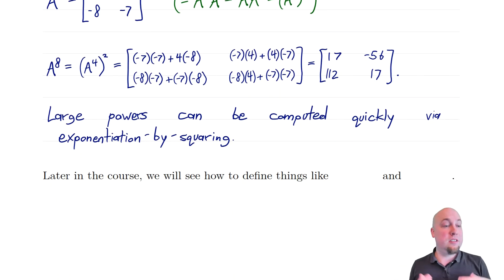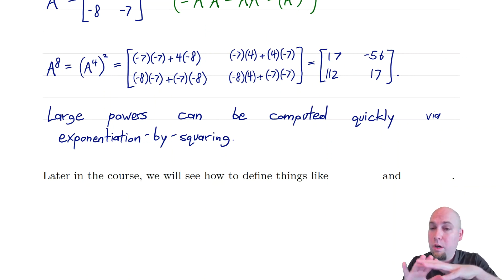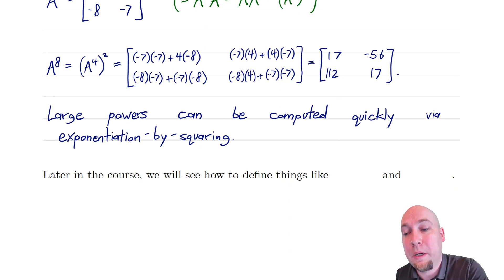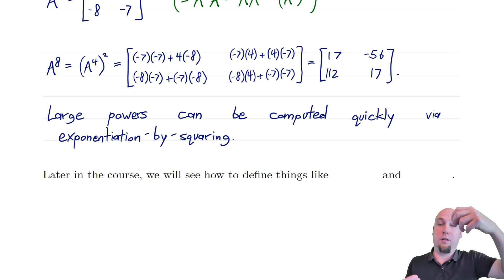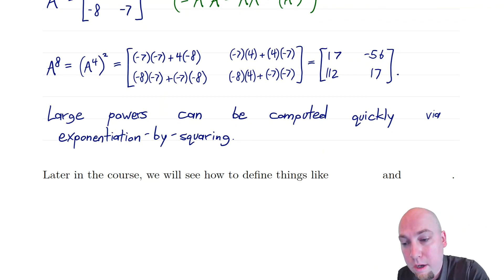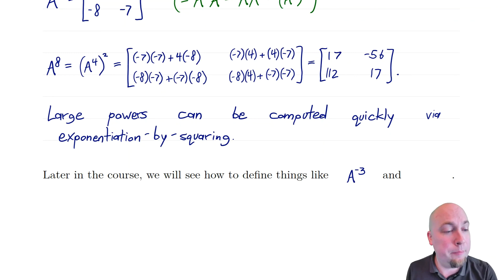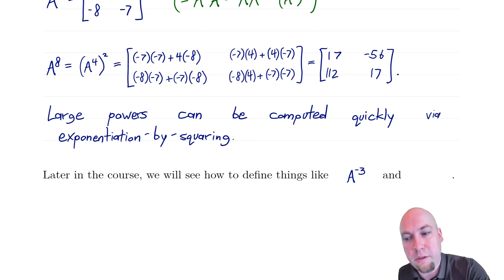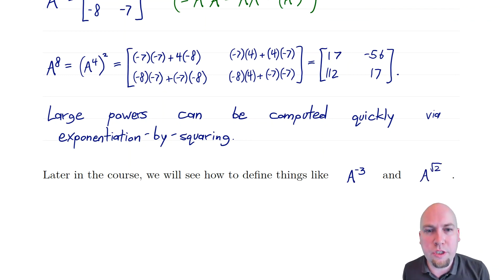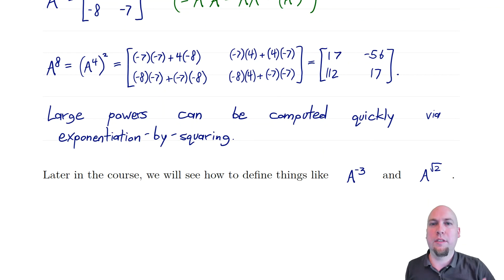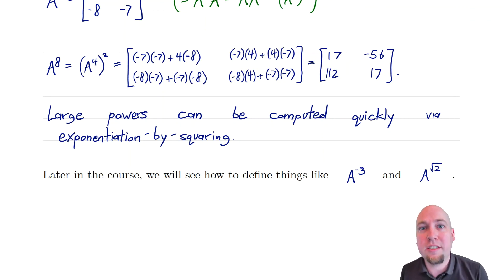That basically does it for powers of matrices. Later on in this course, we'll return to matrix powers and generalize this definition. So far we've only handled non-negative integer exponents: A⁰, A¹, A², A³, and so on. Later we'll learn how to define things like A to the power of minus 3, and even more weirdly, A to the power of root 2, or pi, or 7 fifths — arbitrary real number powers — once we develop a little more theory. We just have one more lecture in week three about matrices, and then we'll move on to bigger and better things.